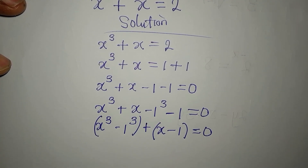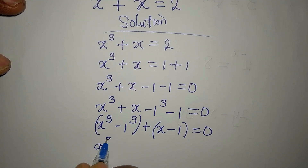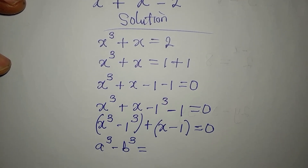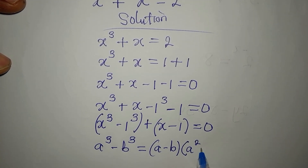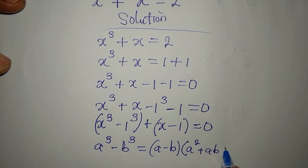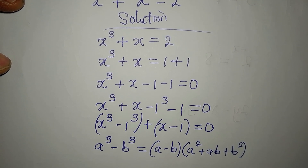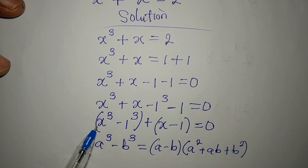We have a difference of two cubes here, because of the power of 3. The identity is: a³ − b³ = (a − b)(a² + ab + b²). Let's recall and apply this formula.